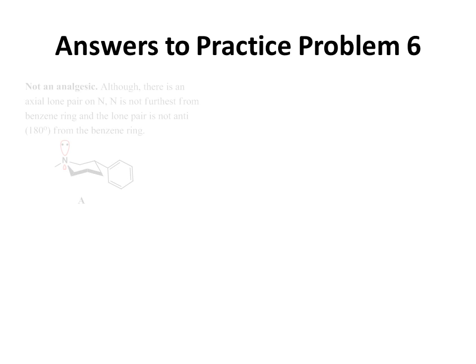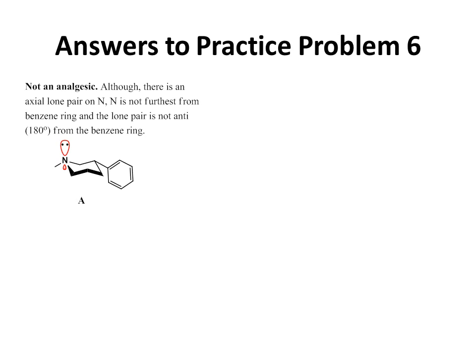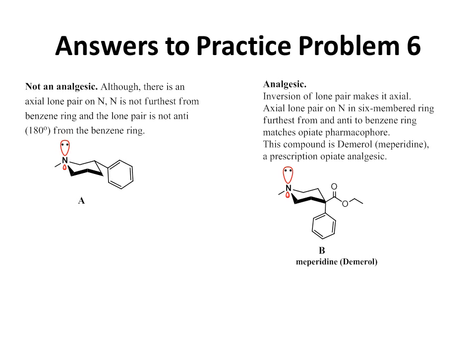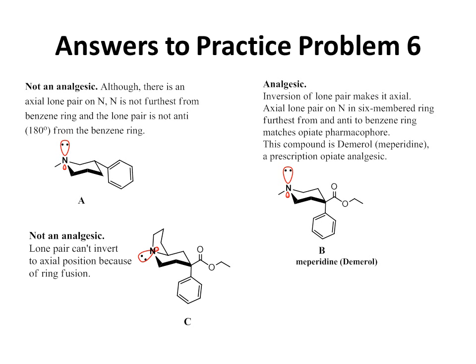Answers to Practice Problem 6. Structure A is not an analgesic. Although there is an axial lone pair on nitrogen, nitrogen is not furthest from the benzene ring, and the lone pair is not anti (180 degrees) from the benzene ring. Structure B is an analgesic — inversion of the lone pair makes it axial, and the axial lone pair on nitrogen in a six-membered ring furthest from and anti to the benzene ring matches the opiate pharmacophore. This compound is Demerol, otherwise known as meperidine, a prescription opiate analgesic. Structure C is not an analgesic because the lone pair can't invert to the axial position due to ring fusion.